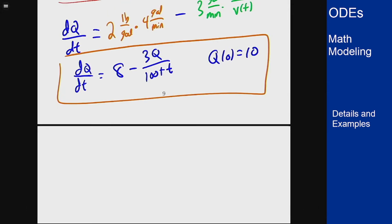If I rearrange the equation I will get Q prime plus 3 over 100 plus t, Q equals 8, which is now in standard form.